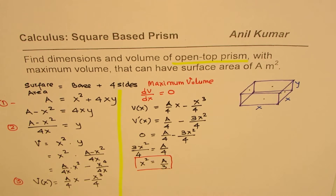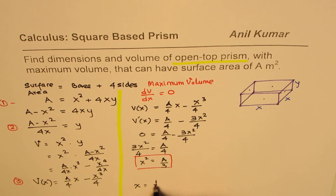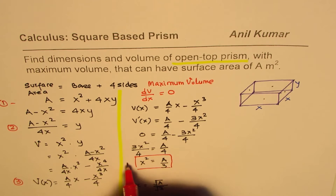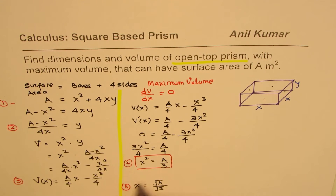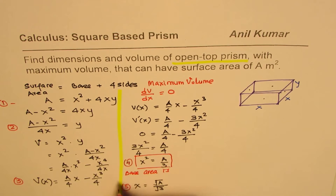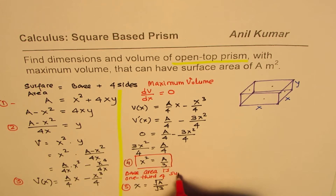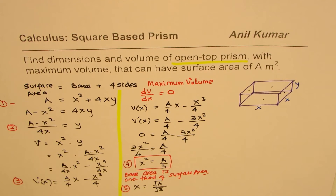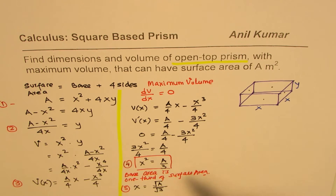So X² = A/3, and X = √(A/3). Let's call these equations 4 and 5. The key conclusion is that the base area is one-third of the surface area for an open-top prism. We can also write X = √A / √3. Let's call this equation 5.